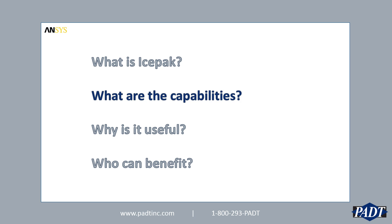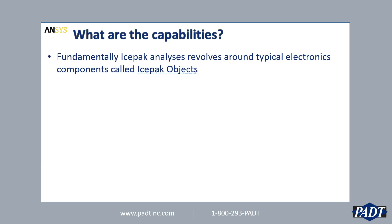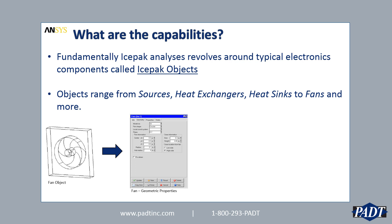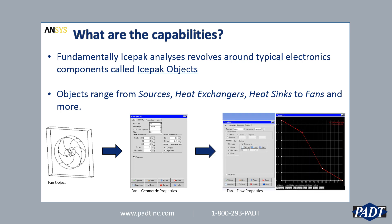Now let's look at some of the capabilities. Fundamentally, ICEPACK analyses revolve around typical electronics components called ICEPACK objects. These objects range from things like sources, heat exchangers, heat sinks, to fans, blowers, and more. Here's an example — a fan object in ICEPACK where we can define its geometric properties as well as its flow properties, in this case looking at a fan curve plotting flow versus pressure. What makes objects extremely useful is it allows engineers to have a consistent model by which they can iterate until arriving at an optimal design very quickly and efficiently.